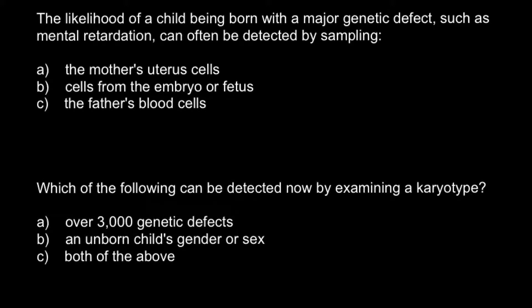Here's the first question: The likelihood of a child being born with major genetic defects such as mental retardation can often be detected by sampling. Here are three answers: Answer A — the mother's uterus cells; Answer B — the cells from the embryo or fetus; and Answer C — the father's blood cells.